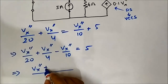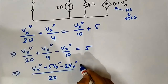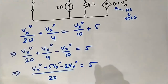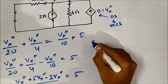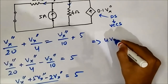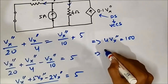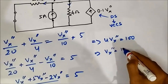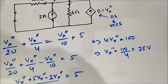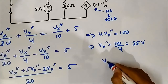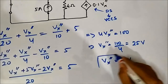Simplifying: taking LCM of 20, we get 5 Vx'' + Vx'' − 2 Vx'' = 4 Vx'', divided by 20, equals 5. So 4 Vx'' = 100, which gives Vx'' = 100/4 = 25 volts.